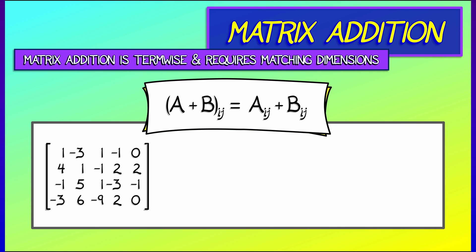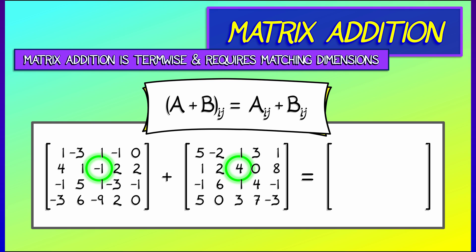For example, if I have two 4 by 5 matrices and I want to add them together, then I pick each entry, let's say the 2,3 entry, negative 1 and 4, and I add them together, in this case, to get 3.